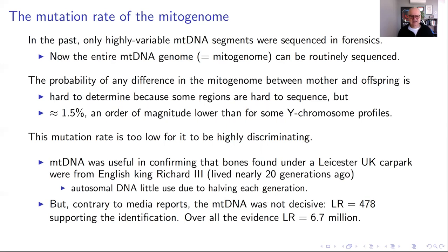I was involved in the analysis of the famous bones found under the car park in Leicester, UK, which were eventually confirmed to have come from English King Richard III, who lived over 500 years ago — roughly 20 generations. Because of that number of generations, the autosomal DNA was of very little value, since it halves every generation; over 20 generations, even a direct descendant would be unlikely to share any autosomal DNA with him. Nobody shares Richard III's mtDNA directly because it's maternally inherited.